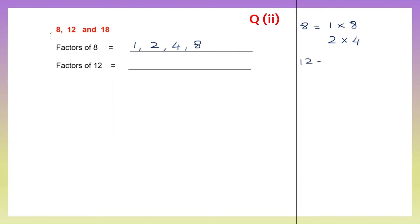Factors of 12: 1 into 12 is 12, then 2 sixes are 12. What else? 3 fours are 12. That's it. So the factors of 12 are 1, 2, 3, 4, 6 and 12.